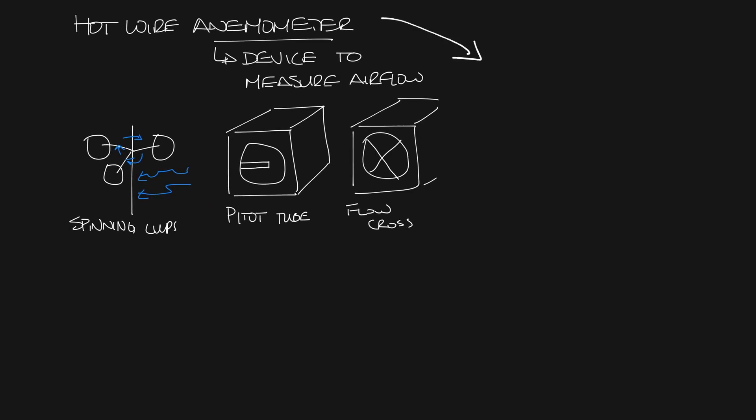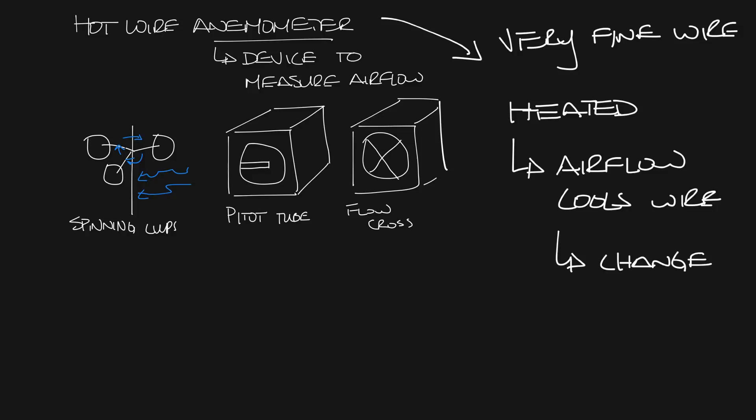A hot wire anemometer is pretty much what it sounds like. It's a very fine wire that is heated and put in airflow. Air flowing past the wire cools the wire down. Since the electrical resistance of the wire changes with temperature, you can use this change in resistance caused by the temperature drop to calculate the airflow across the wire.